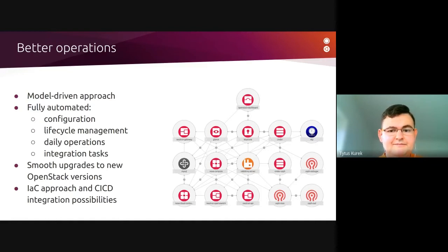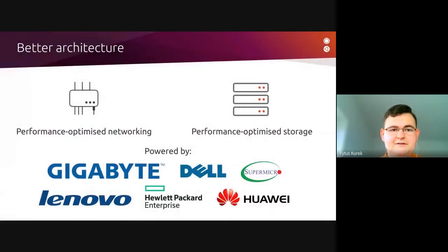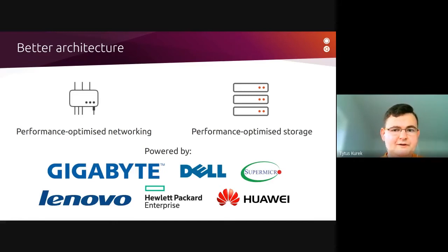The second pillar is better architecture. Our goal is to provide the best price performance — an architecture that achieves the best performance results and is still available at a competitive price. For this purpose, we work with various hardware vendors to provide a solution where networking is performance-optimized and same for storage. And we work with various hardware vendors to make sure that our reference architecture for OpenStack is available through those vendors at the cheapest possible price.